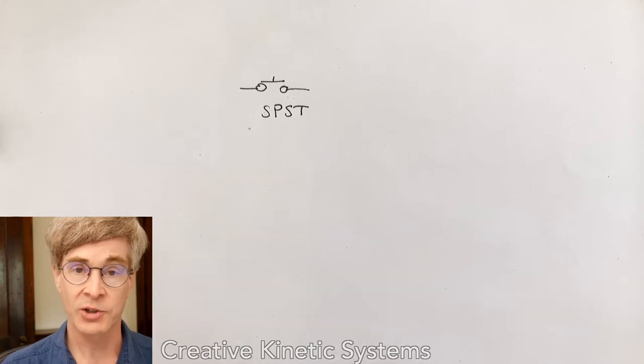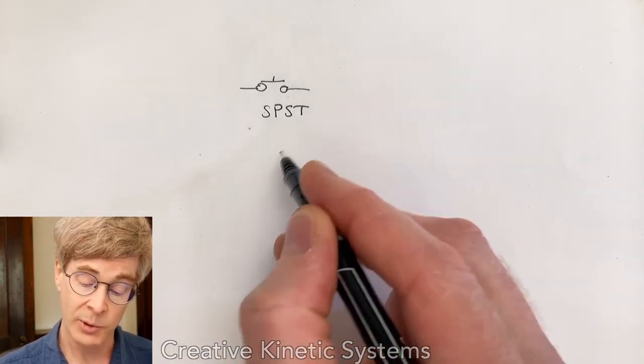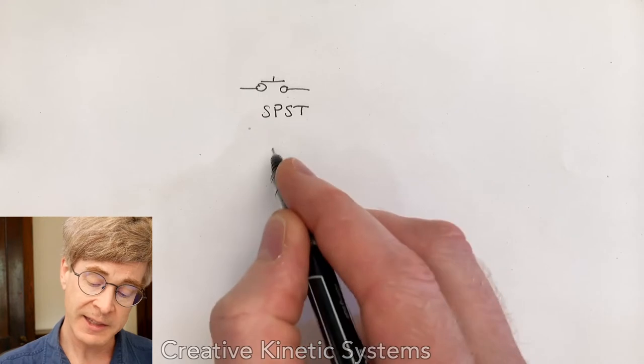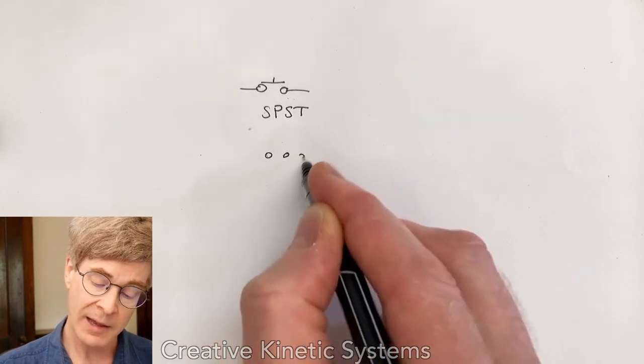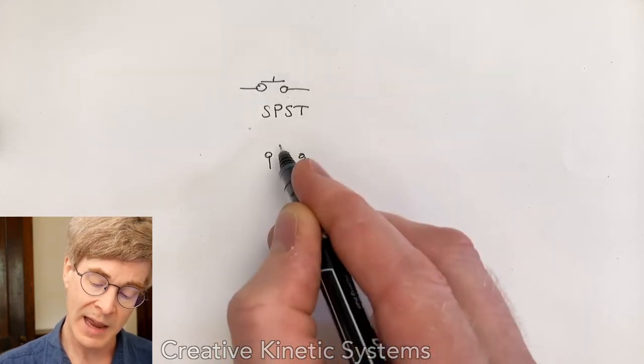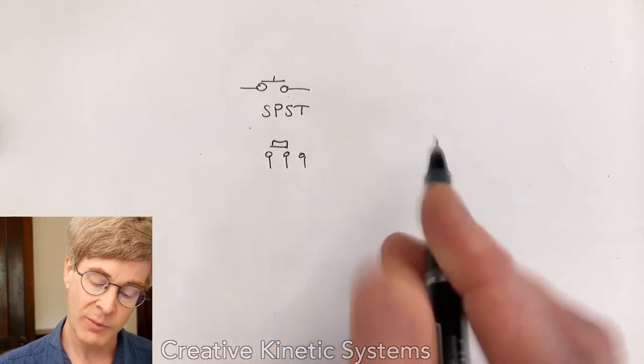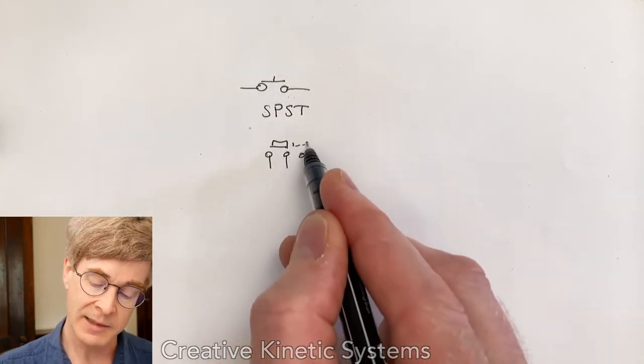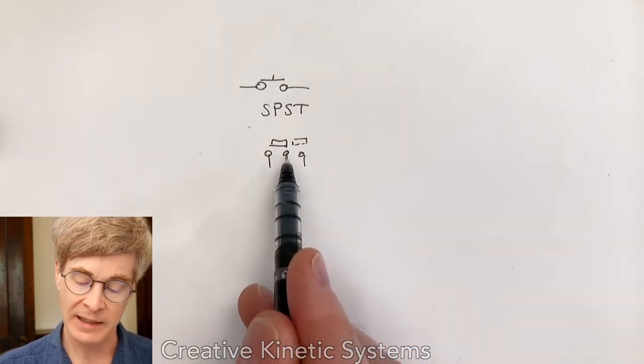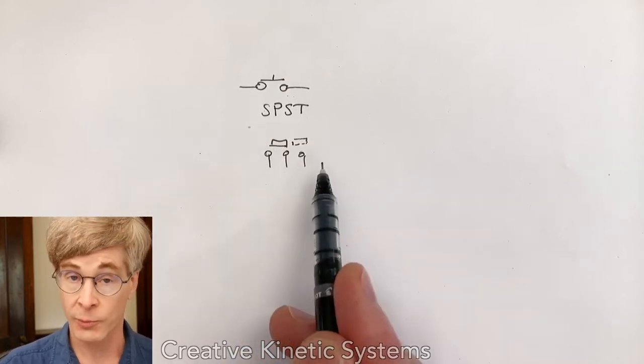Another switch structure that we care a lot about would be the single-pole double-throw switch. Physically, if you have three contacts and a bit of metal that could move back and forth to one of the other states, you might imagine connecting the center terminal to the left or the right, but not both.